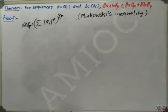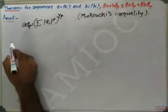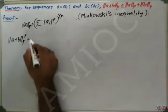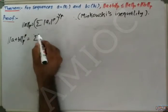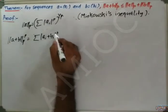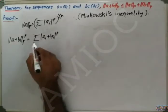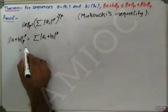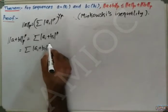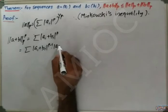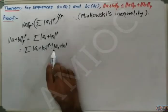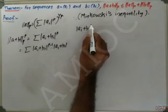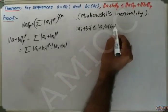Norm a_p equals (Σ|a_i|^p)^(1/p). Now, the norm of a+b raised to p involves |a_i + b_i|^p. We can apply the triangle inequality for modulus: |a_i + b_i| ≤ |a_i| + |b_i|.